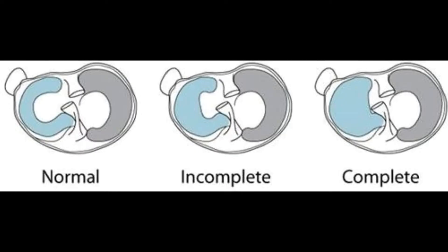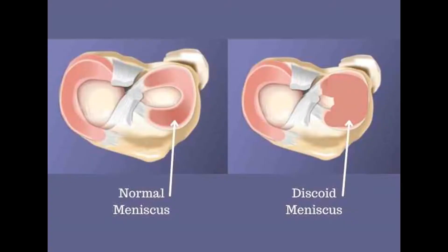A discoid meniscus is an abnormally developed meniscus which is hypertrophic and discoid in shape. It is a relatively common problem which involves 3 to 5 percent of the population. Usually the lateral meniscus is more involved than the medial meniscus.